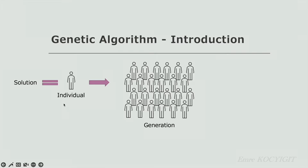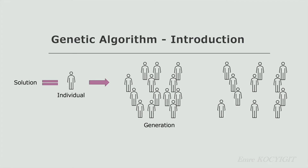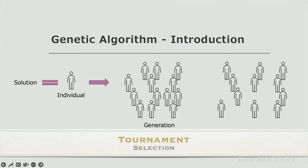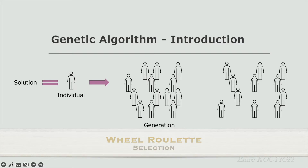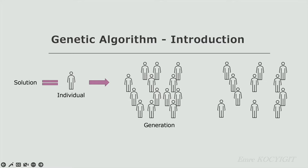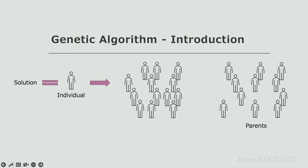Now let's see the important operators or phases of genetic algorithm one by one. Think of each solution as an individual. We will create different valid solutions randomly to generate our initial population — this will be our first generation. Then we will select some solutions based on the survival of the fittest principle. We will select mostly better solutions, but be careful — we will not always select the absolute best solutions. We will randomly select some, then use the fittest ones. This random element is vital. I will show tournament selection, but there are different selection techniques like wheel roulette selection.